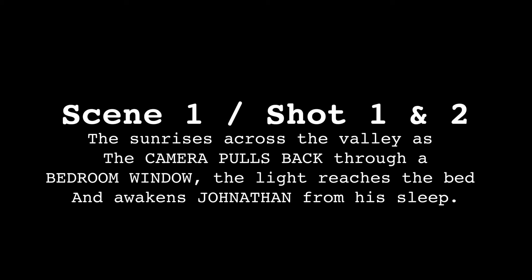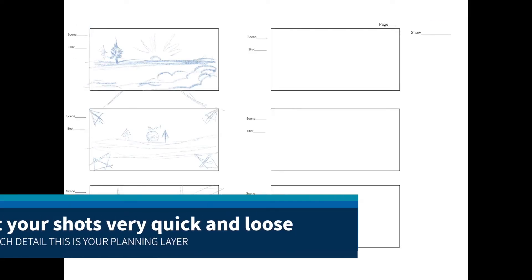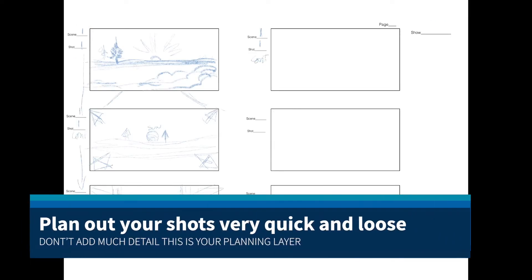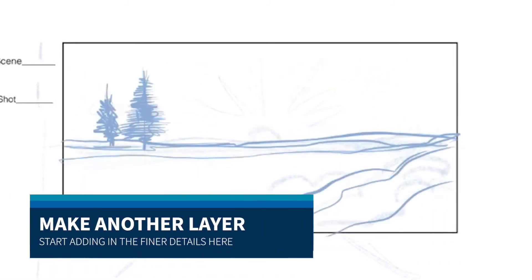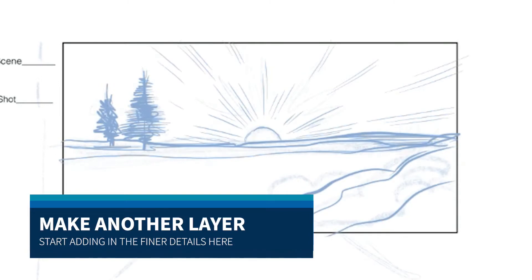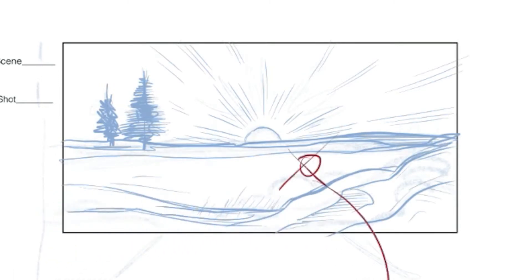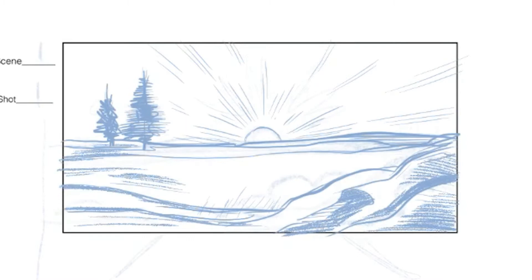Let's start with the scene. We've decided to go ahead and make one long tracking shot starting from the sunrise on the horizon, and it pulls back all the way through the window. Then we'll go inside the bedroom and we'll have a second shot of the man waking up in the bed.